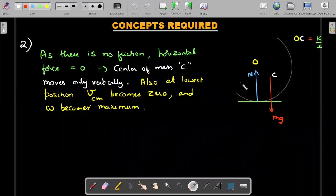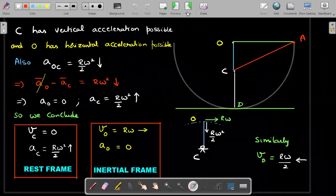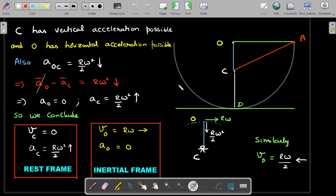So these are the two things about O and C that we have noticed and also one simple concept that for a hemispherical shell, the center of mass should lie at a distance of R by two. This is another thing that you need to know. Let's move ahead.